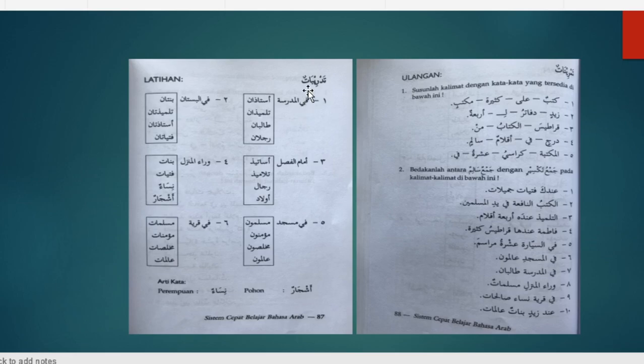Kita ada latihan. Latihan pertama: kalau ada tambahan Alif dan Nun atau Ani berarti bentuknya Mutsanna. Contoh: Fiddurji Qalamaini, Fil Bustani Bintani, Fil Bustani Tilmidhatani, Fil Bustani Ustadzatani, Fil Bustani Fatayatani. Jika ada Alif dan Nun atau Ani, maka kalimatnya Mutsanna atau menunjukkan dua.